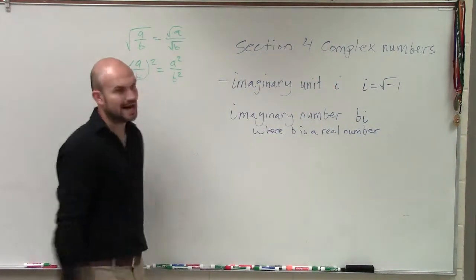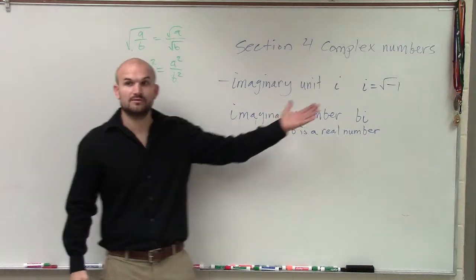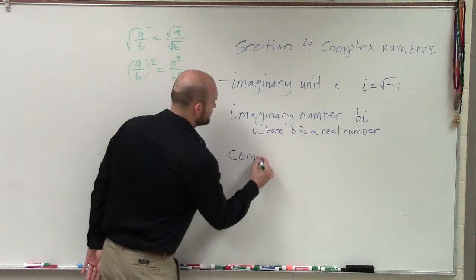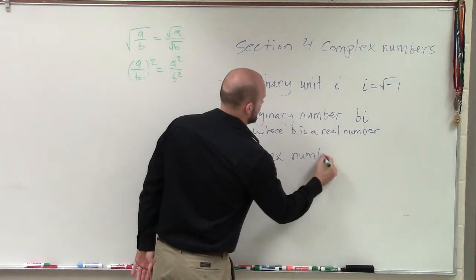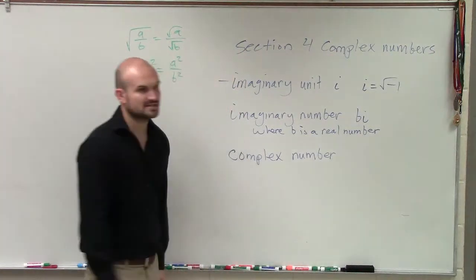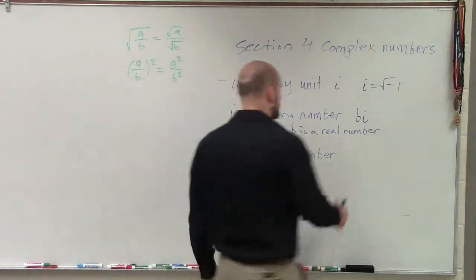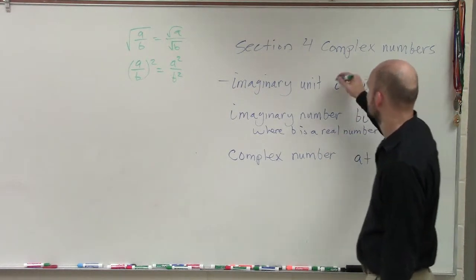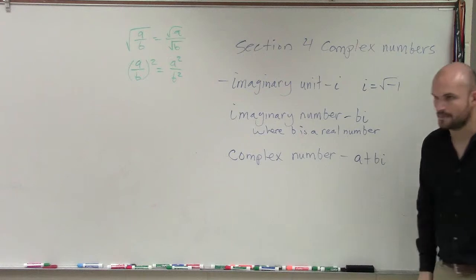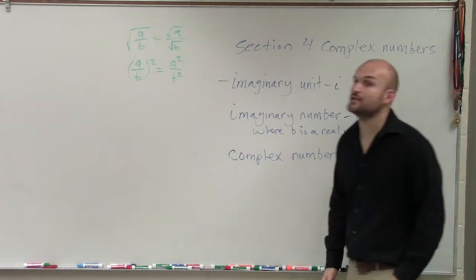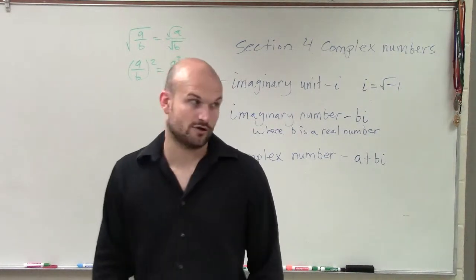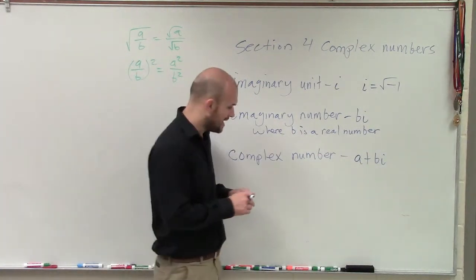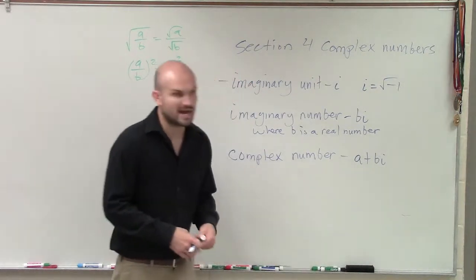So we have an imaginary unit, which is i. An imaginary number, which is our imaginary unit times a real number. And then we have our lovely complex numbers. So complex numbers come in the form of a plus bi. So you're going to want to make sure you write your complex numbers in the form a plus bi or you're not going to get credit for it being a complex number. So that's the form we want them to be written in. So on complex numbers, we have them broken down.